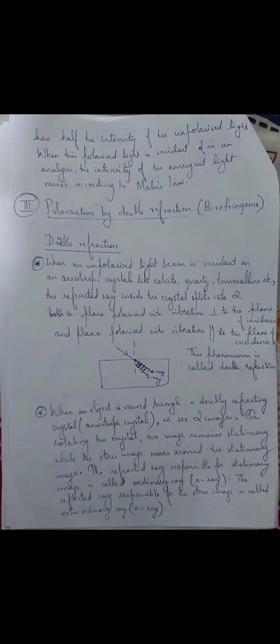Since the two refracted rays are plane polarized, the method of double refraction can be used for producing polarized light. The three methods for producing polarized light are: polarization by reflection, polarization by refraction, and polarization by double refraction. I hope this session is clear to all of you. If you have any doubts, do contact. Thank you.